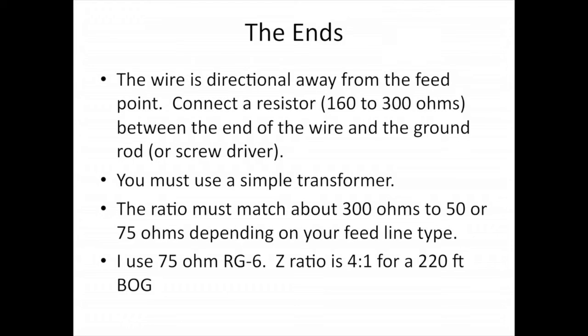Now the wire is directional away from the feed point. So feed it on the southwest end, point it, run it northeast, and you have a European bog. Connect a resistor somewhere between 160 to 300 ohms between the end of the wire and the ground rod. Now you must use a simple transformer to feed the beverage. The ratio must match about 300 ohms to 50 or 75 ohms depending on your feed line type. I use a 75 ohm RG6 coax and an impedance ratio of 4 to 1 for a 220 foot bog, and it seems to work just fine. These ratios are not necessarily critical. You just have to be in the ballpark.